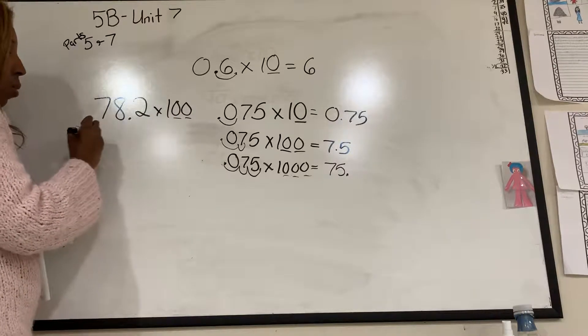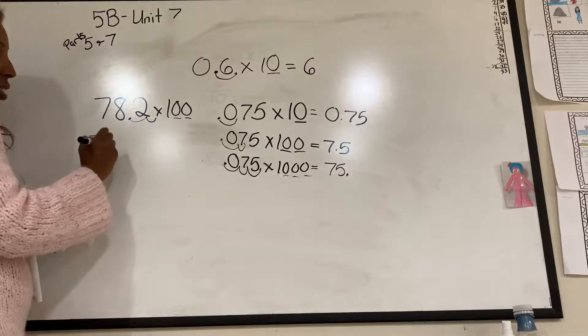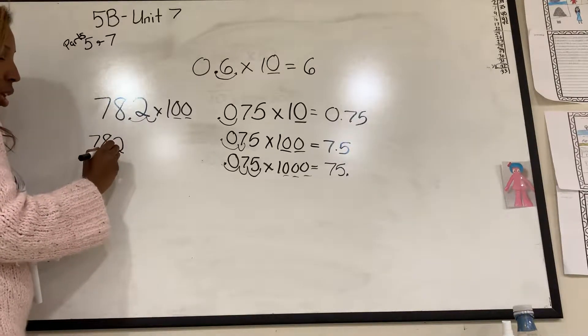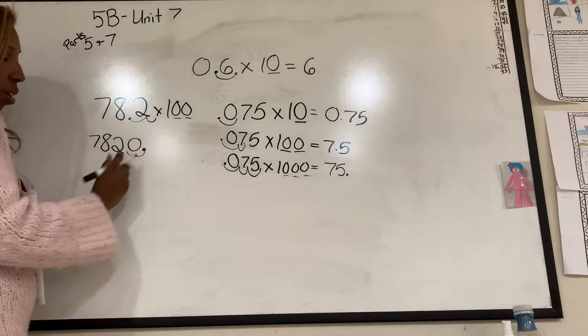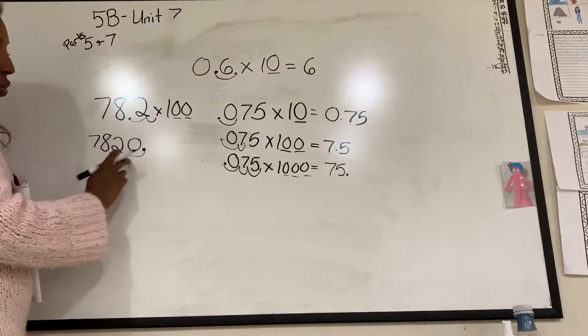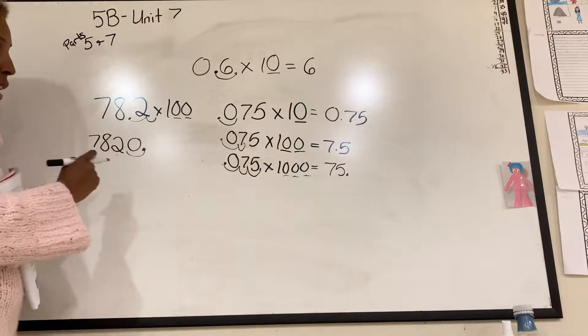So that means I have seven, eight, two. But again, I moved it one, two. I have to put a zero there. So when you have to move it and there's no more numbers, just put a zero in its spot.